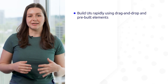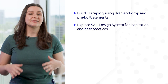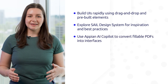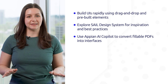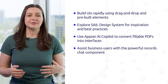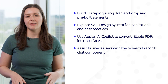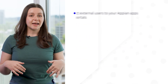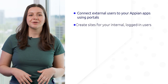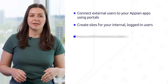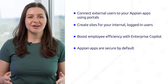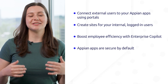Let's recap. Build Appian UIs rapidly using drag-and-drop functionality and pre-built elements. Explore the Sale Design System for inspiration and best practices. Use Appian AI Copilot to convert available PDF forms into interfaces effortlessly. Assist business users with the powerful Records Chat component. Easily create UIs that can be used on both web and mobile without redesign. Connect external users to your Appian apps using portals. Create sites for your internal logged-in users. Boost employee efficiency with Enterprise Copilot, a generative AI chat experience. And rest assured, Appian apps are secure by default and comply with industry security standards.